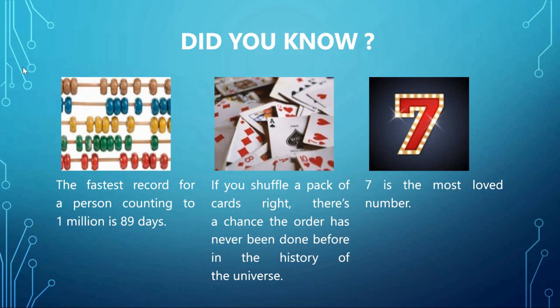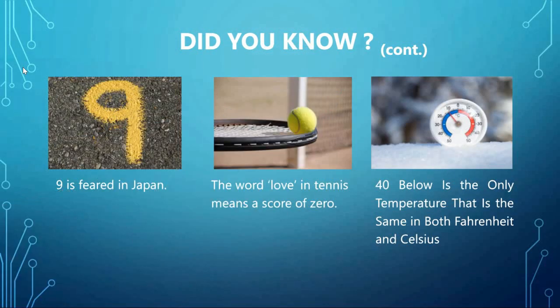Did you know? The fastest record for a person counting to one million is 89 days. If you shuffle a pack of cards, there is a chance the order has never occurred before in the history of the universe. Seven is the most loved number. Nine is feared in Japan. In tennis, the word 'love' means a score of zero. And 40 below is the only temperature that is the same in both Fahrenheit and Celsius.